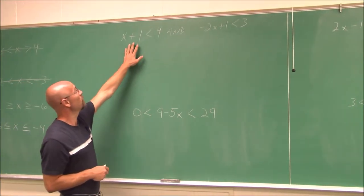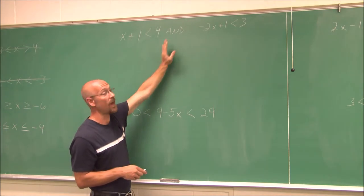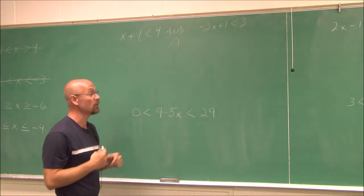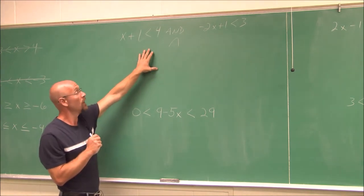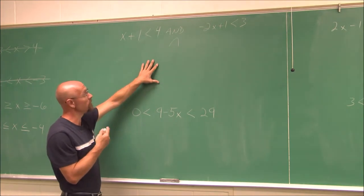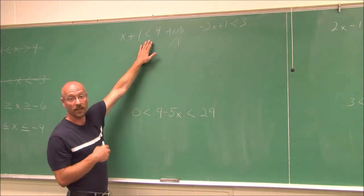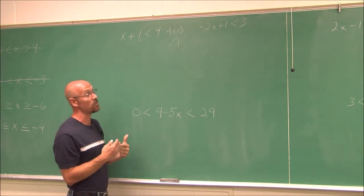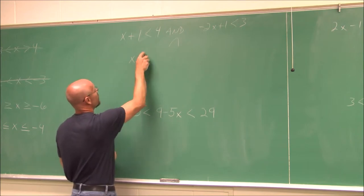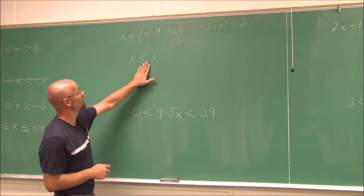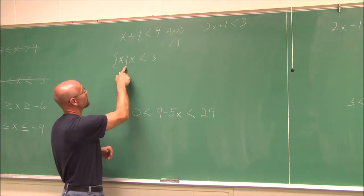Let's look at two examples. We have X plus 1 is less than 4, AND negative 2X plus 1 is less than 3. We're going to write the answer in set notation, interval notation, and as a graph. For the first inequality, subtract 1 from both sides to get X is less than 3. In set notation: the set of X such that X is less than 3.